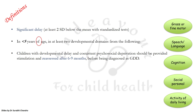An important thing to remember is that children with developmental delay and co-existent psychosocial deprivation should be provided stimulation and reassessed again after 6-9 months before being labelled as having global developmental delay. This is because such children — who turn orphan at birth, whose mother expires soon postnatally, or where there is family discordance or extreme poverty — may show initial delay but might catch up with timely developmentally supportive care and rectification of the underlying problem.